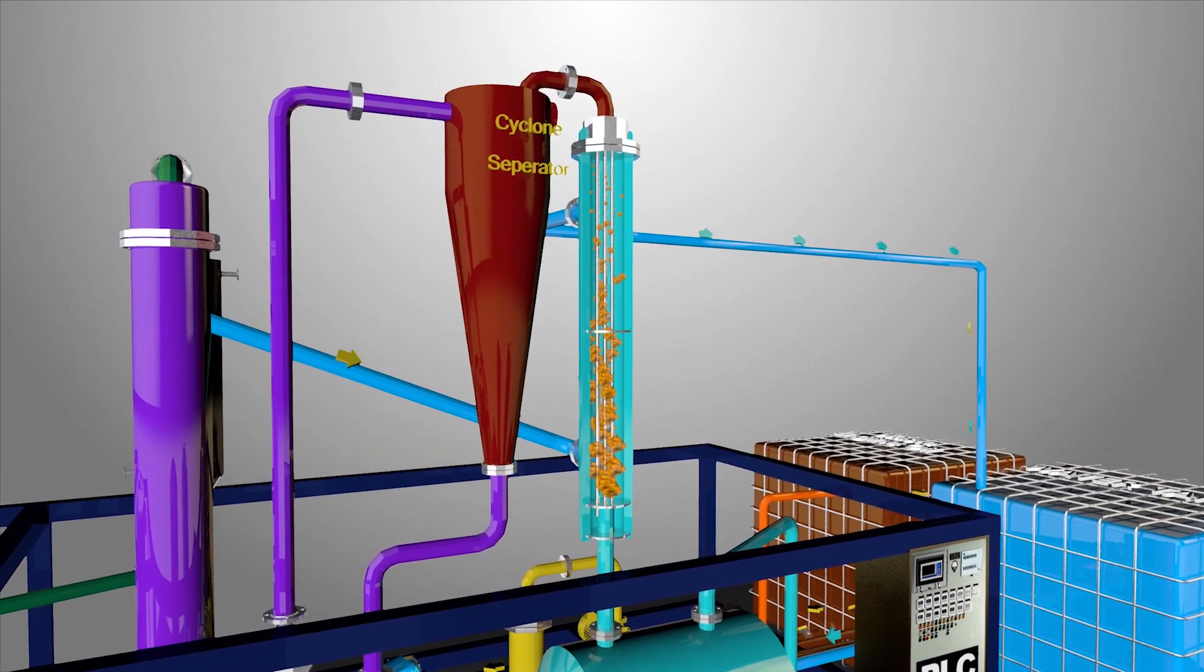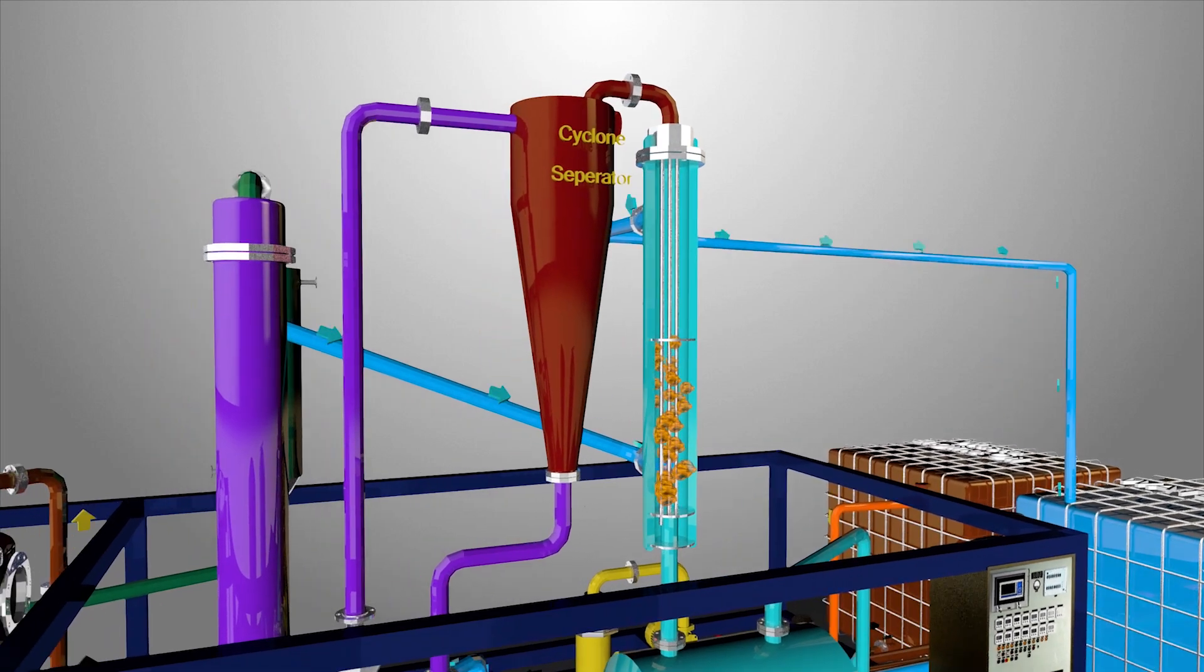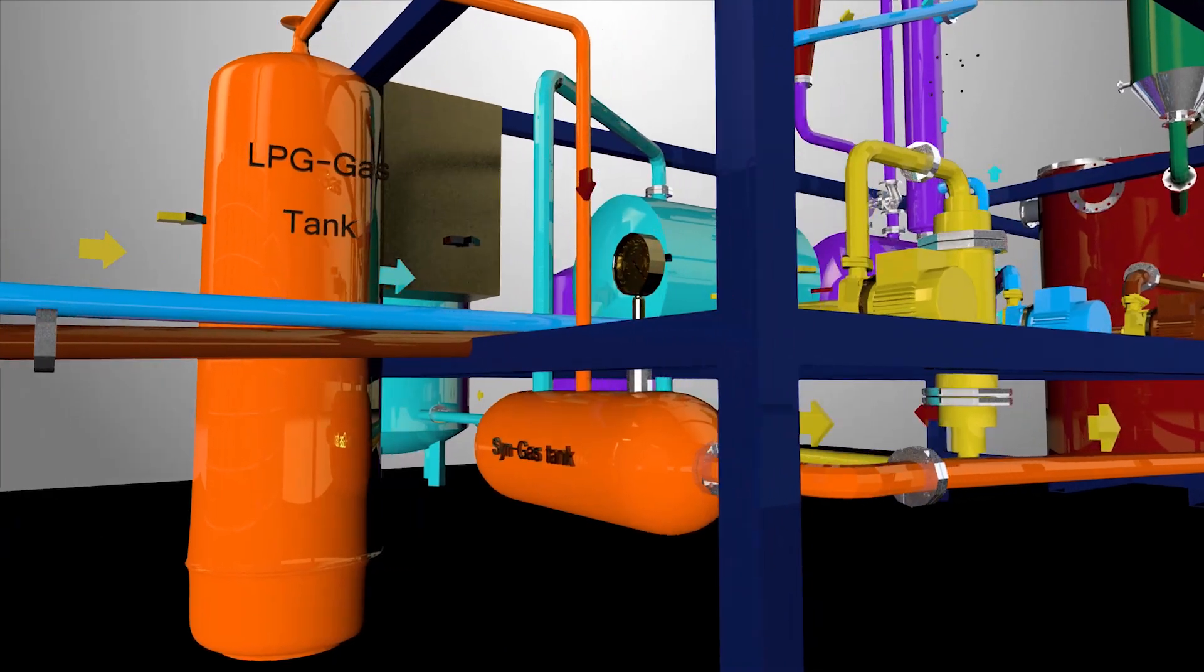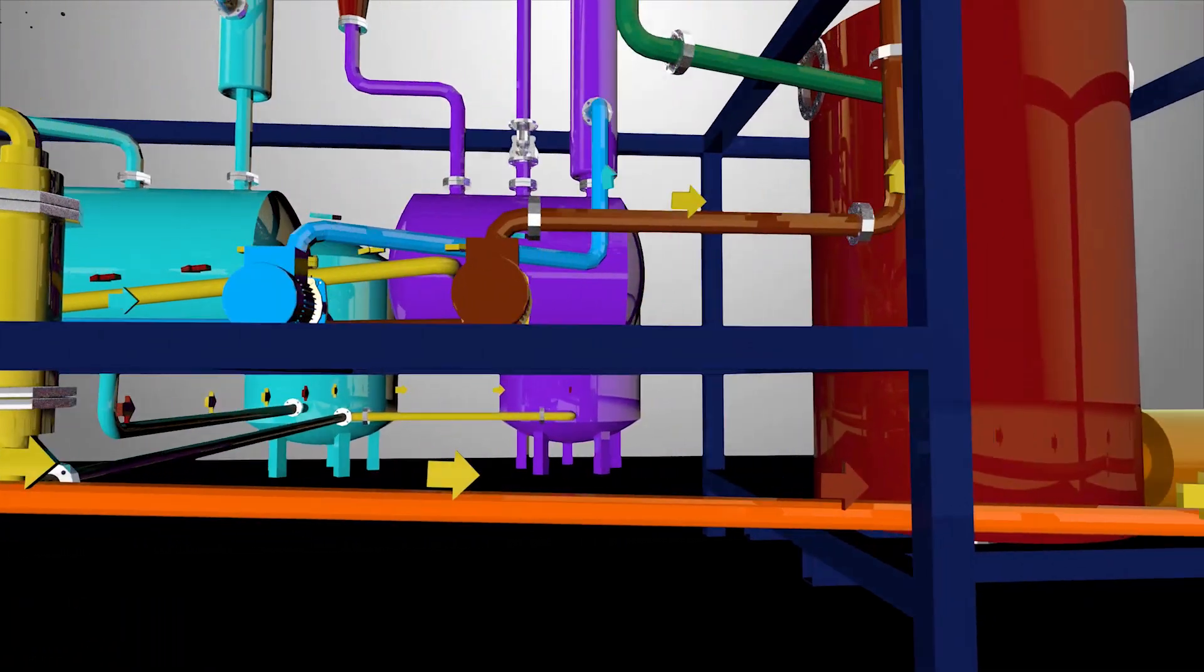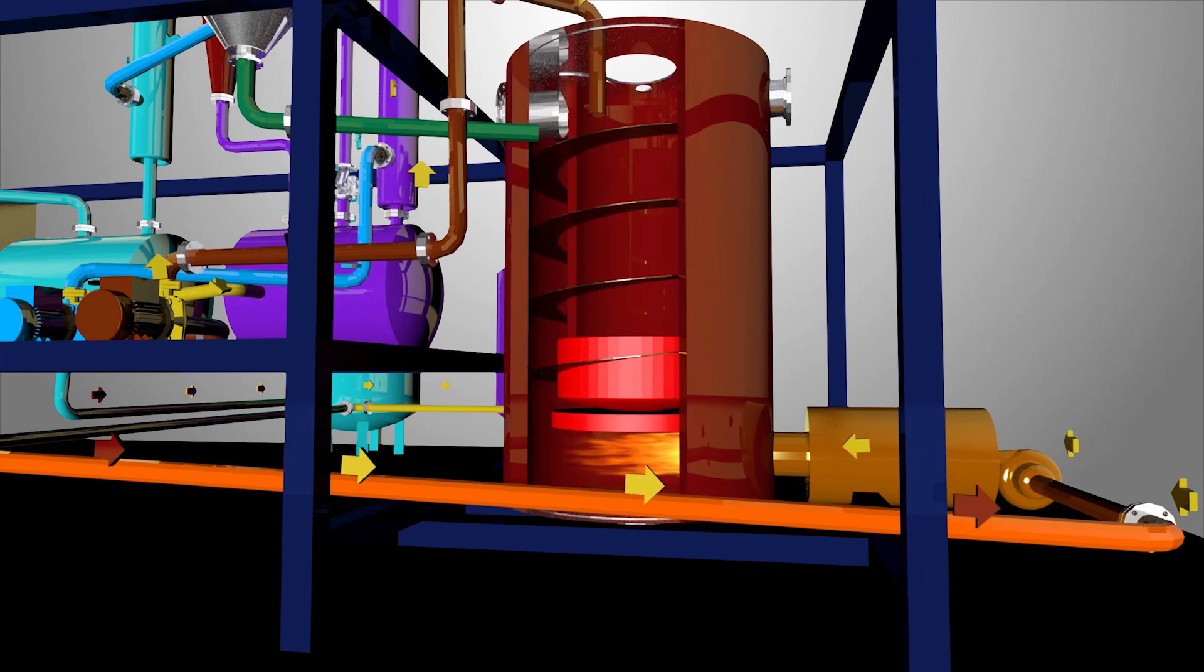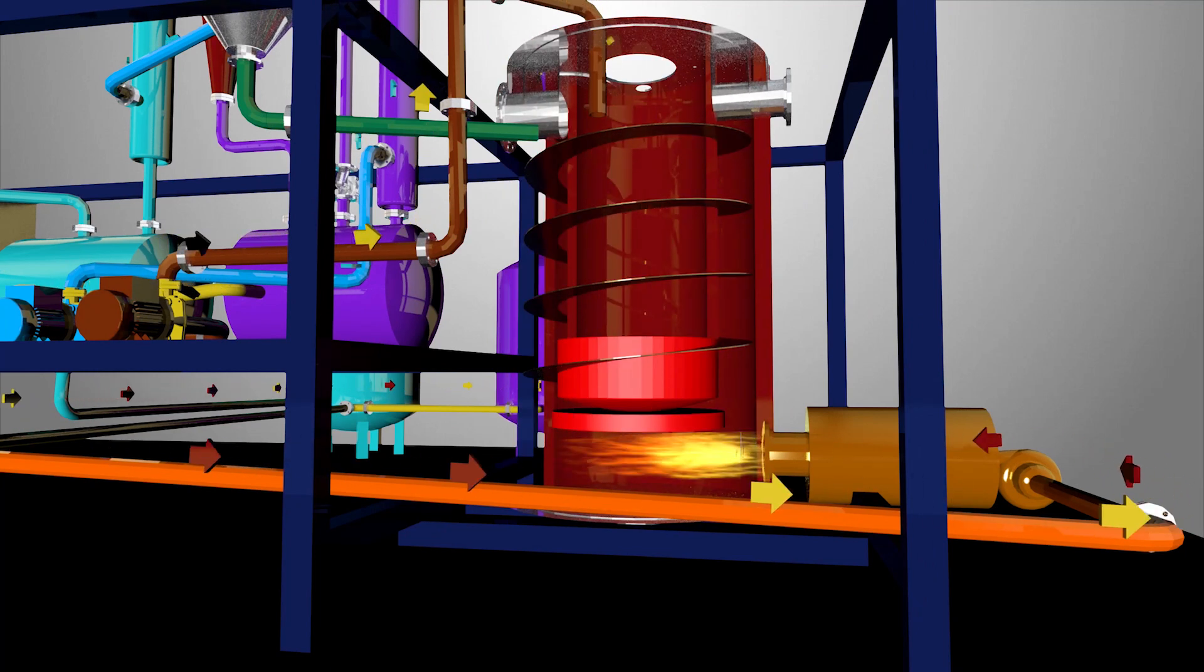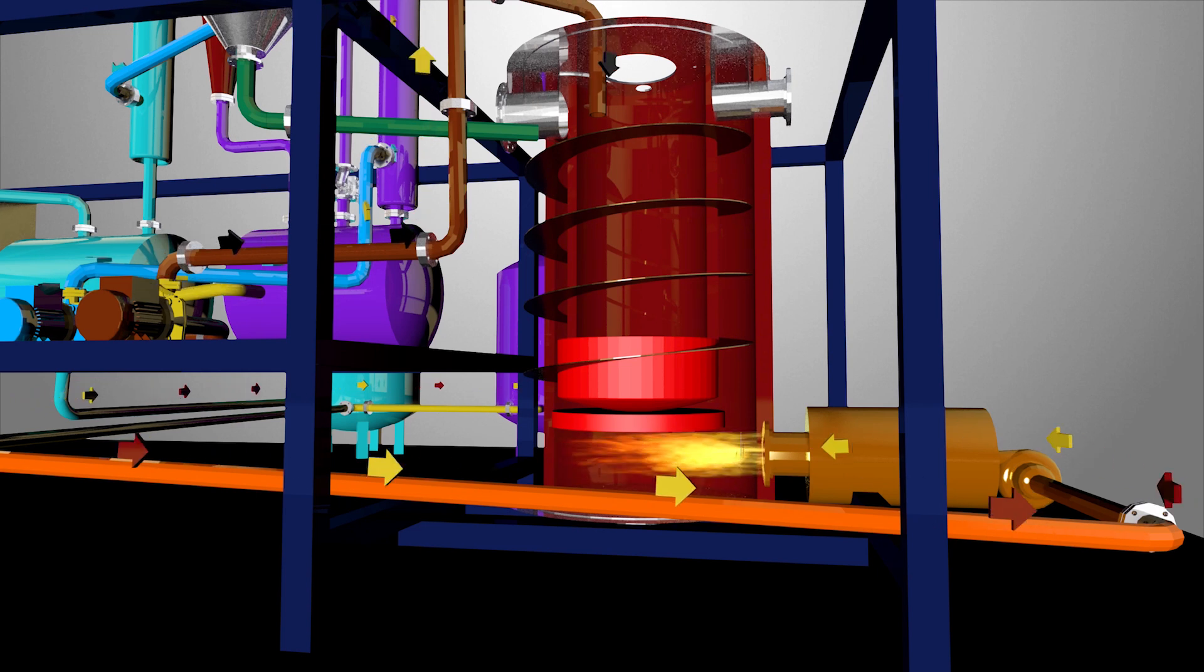The syngas from the naphtha condenser tank travels to the syngas tank. When required, the syngas is led to the burner which heats the reactor. Therefore, the pyrolysis plant is a closed-loop process ensuring zero gas emission to the atmosphere.